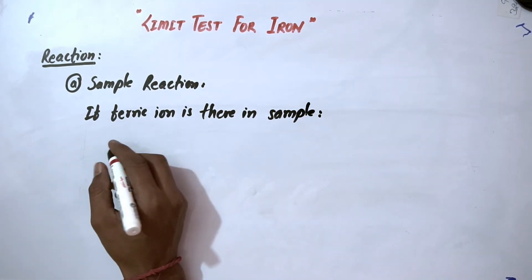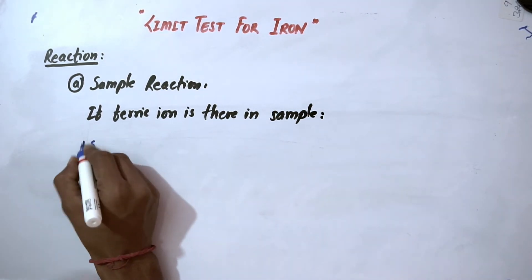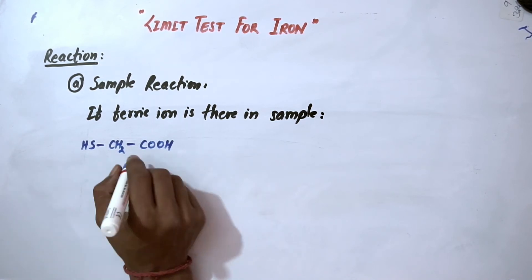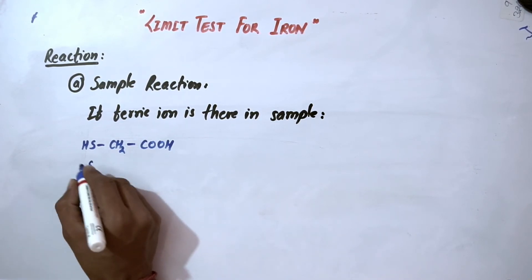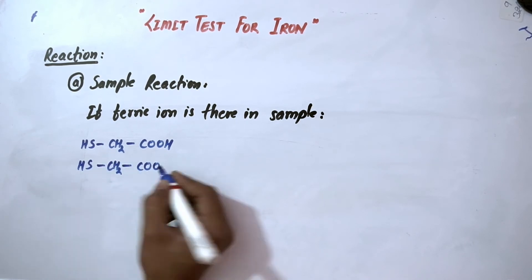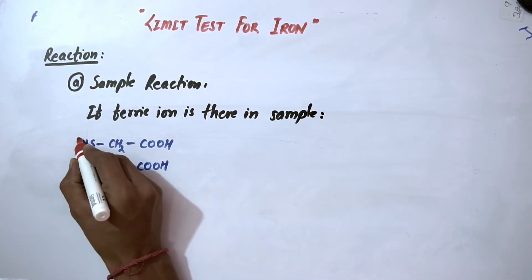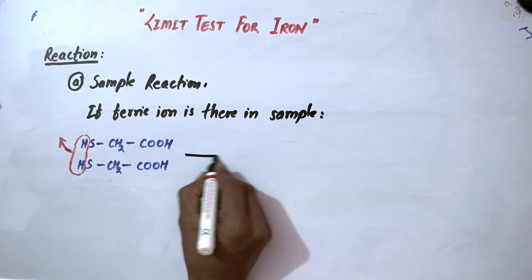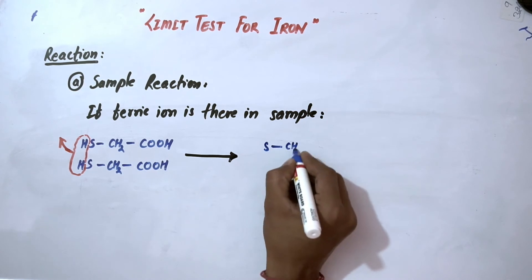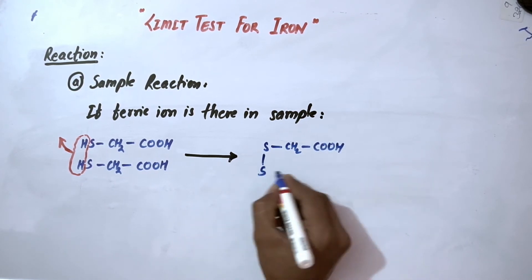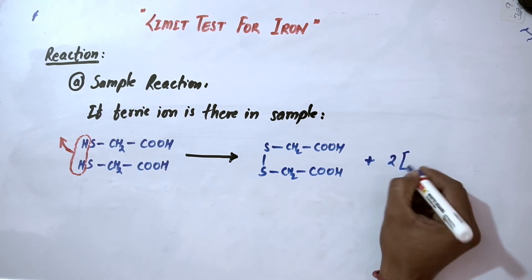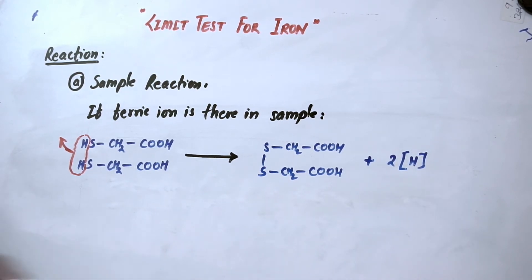No need to worry. Here, what will happen: two molecules of thioglycolic acid, you write like this, they will react with each other and this hydrogen will go outside as nascent hydrogen. They will produce disulfide glycolic acid and two nascent hydrogen.